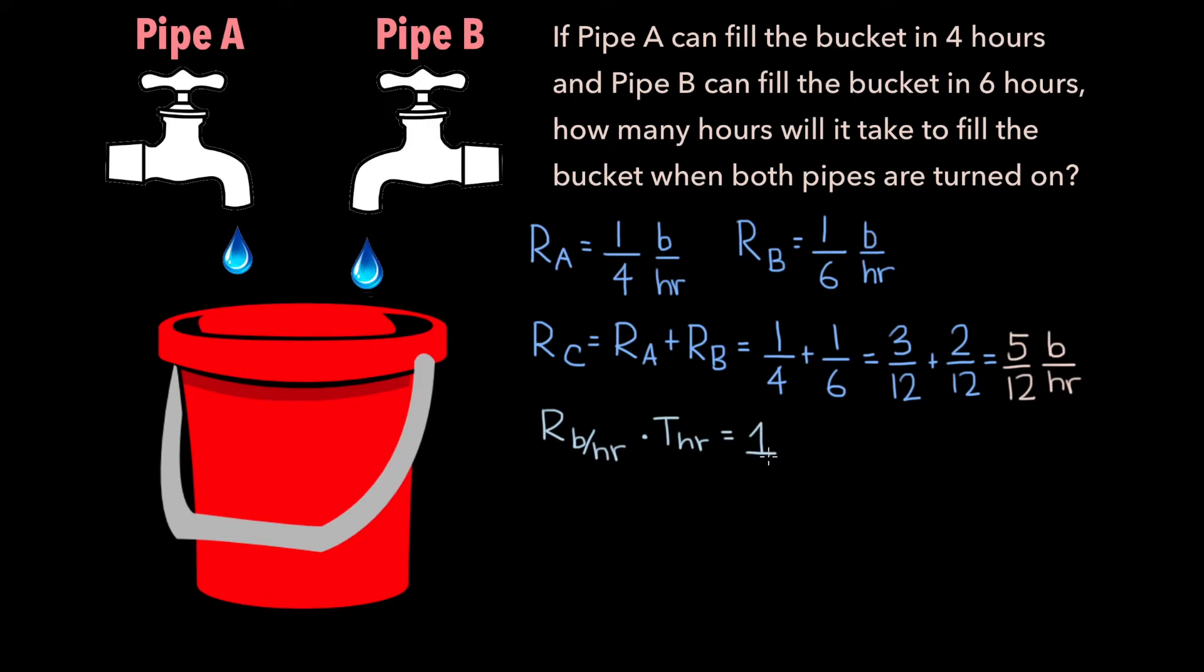We just determined that the rate is 5 over 12. So 5 over 12 times the time must be equal to 1, and so we know the time is 12 over 5 or 2.4 hours.